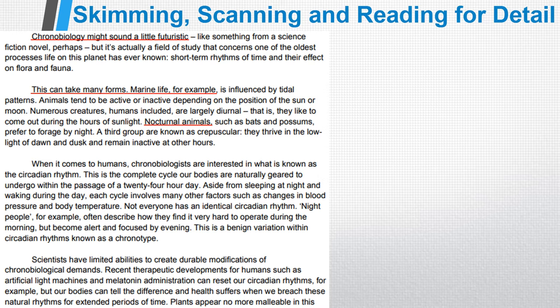The third paragraph starts 'When it comes to humans,' so immediately I know that paragraph is going to tell us about chronobiology and humans. Another sentence I might skim read: 'Not everyone has an identical circadian rhythm,' so I know that's going to tell us something about the differences halfway through that paragraph. The fourth paragraph starts 'Scientists have limited abilities,' so that's going to tell us something about the limitations of scientific understanding.